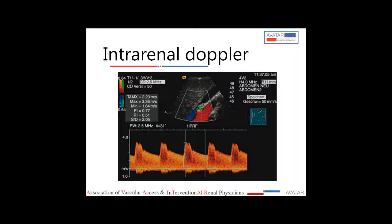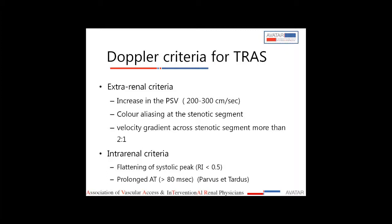In extra-renal Doppler, tracing the entire graft renal artery from origin to hilum, this image shows an end-to-side anastomosis since you can trace the iliac artery both proximal and distal to the anastomotic site. Important parameters studied: peak systolic velocity more than 200 cm/sec at any point along the graft renal artery is suggestive of stenosis; color aliasing — multiple mixed color signals within a segment; and a velocity gradient between the proximal iliac segment and renal segment of more than 2:1. These three are extra-renal criteria to diagnose TRAS.